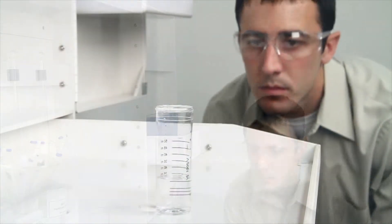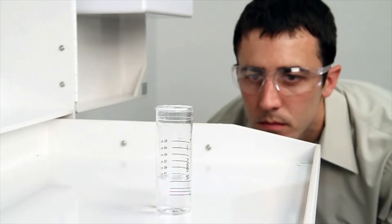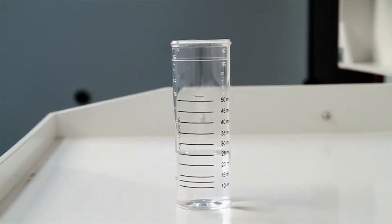When performing a drop count titration, a white background can provide contrast to better see the color changes. A cabinet tray or a white paper towel can provide that contrast.